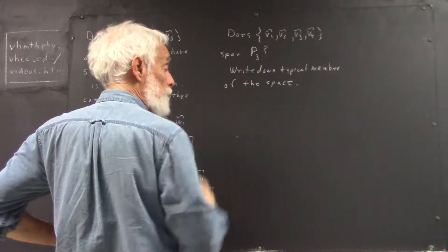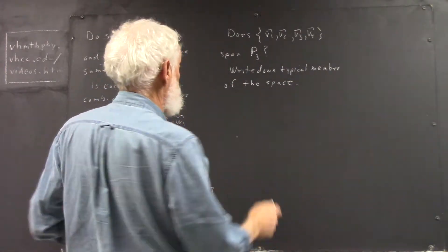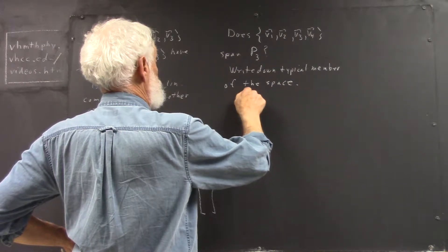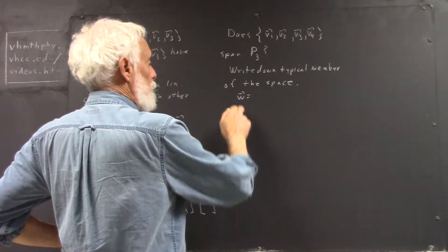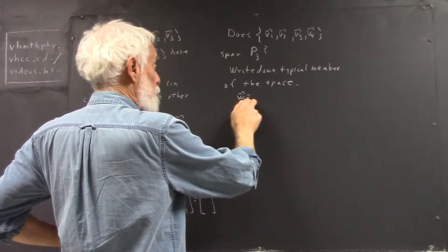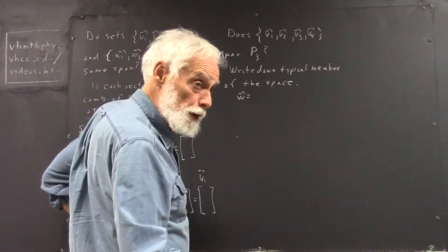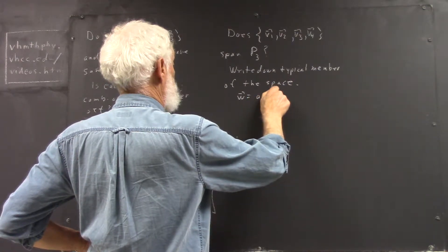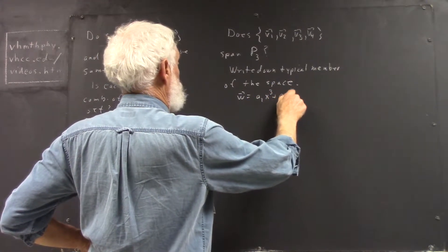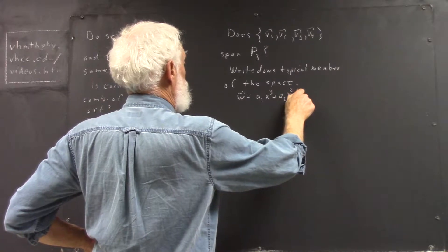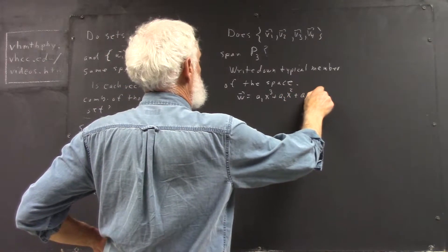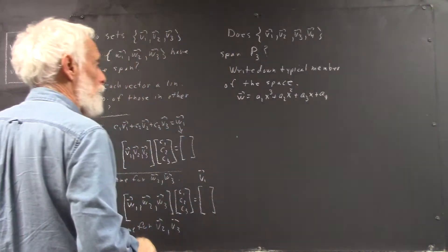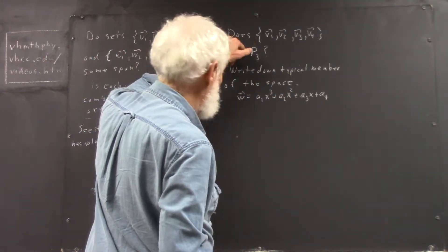Well, the space is P3. Typical member would be a vector W consisting of a general third degree polynomial. So I'll call that a1x cubed plus a2x squared plus a3x plus a4. This is a typical member of P3.